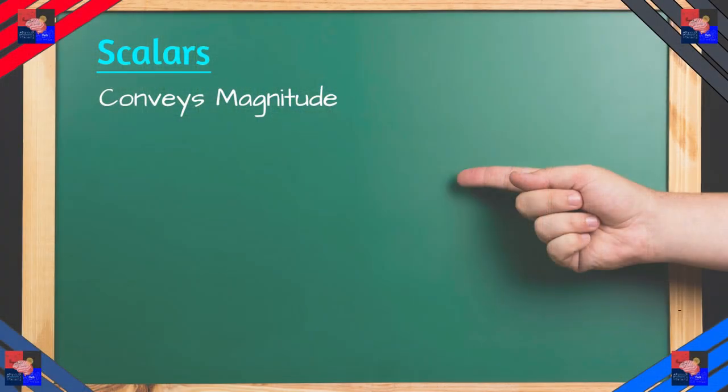So let's begin with the two basic things that we will be looking over in physics: scalars and vectors. So what is a scalar? A scalar is something that only conveys magnitude, a quantity.